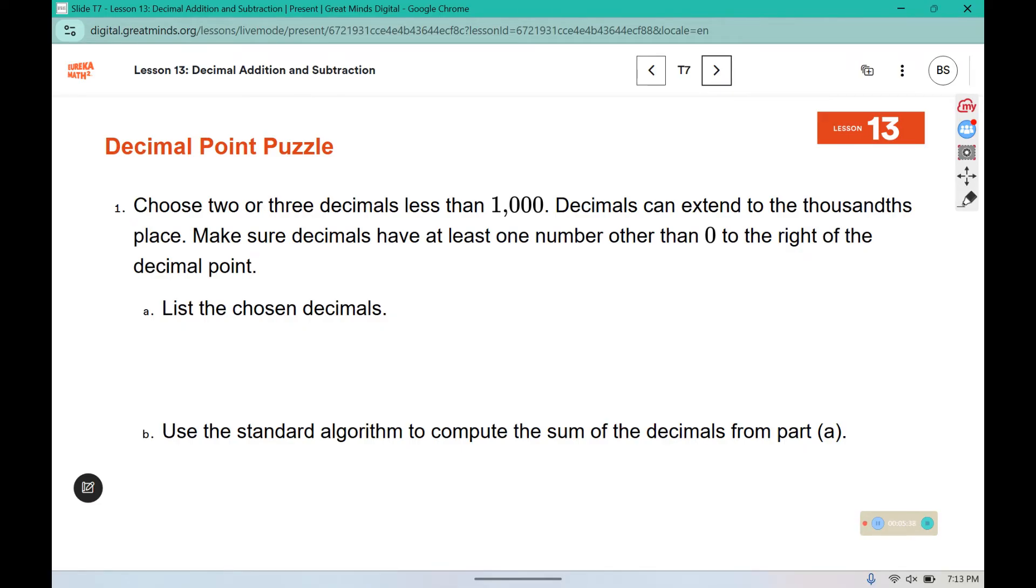Number 1. Choose 2 or 3 decimals less than 1,000. Decimals can extend to the thousandths place, so 3 decimal spots. Make sure decimals have at least one number other than 0 to the right of the decimal point. List your chosen decimals. So your number has to be less than 1,000, like 800 is less than 1,000. And it should extend past the decimal point. It says have at least one number with decimals other than 0, so I have some decimals there. It says don't extend past the thousandths place. So I only have to the hundredths, but I could have one additional place value if I needed to. I have selected two additional decimals here, one of which extends into the thousandths place.